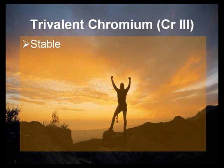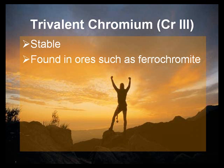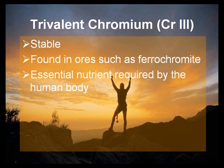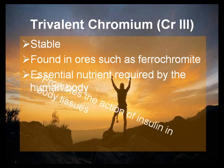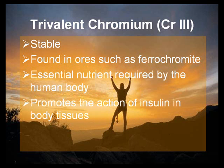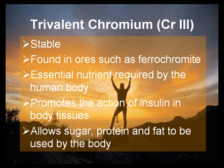Trivalent chromium compounds are stable and are found in ores such as ferrochromite. Chrome-3 is an essential nutrient required by the human body. It promotes the action of insulin in body tissues and allows sugar, protein, and fat to be used by the body.